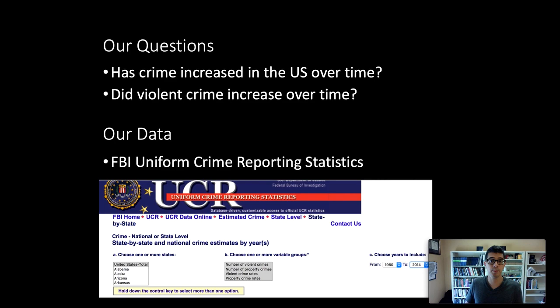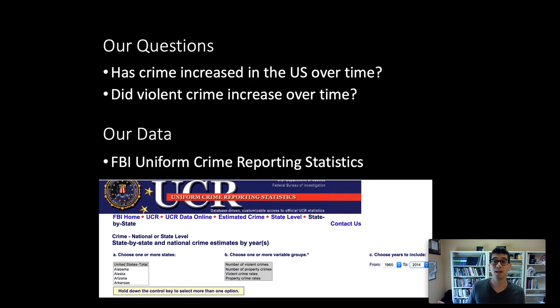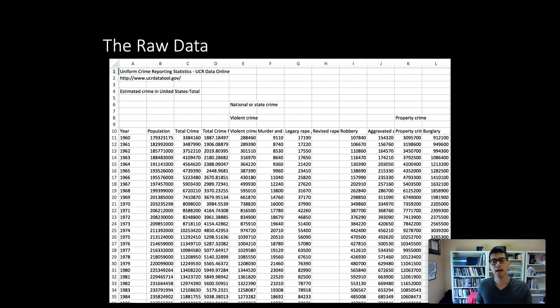The FBI collects data from local police precincts, which compile police reports on all crimes by type each year. It's not 100% coverage — the vast majority of precincts report, but not all. Also keep in mind these data only capture crimes for which a police report was filed, so all unreported crimes are missing. Despite these limitations, the FBI UCR is the most comprehensive data source on crime rates in the United States.